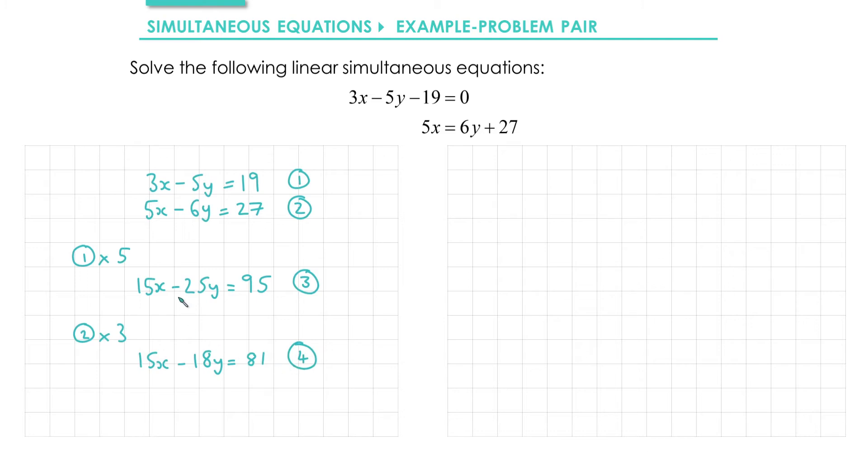The next step is to eliminate the x's from the equation. I can do that by subtracting one equation from the other. Now it doesn't matter which way around you do it, I'm going to do 3 take 4. So that will give us 15x minus 15x which is 0. I've got negative 25y and I'm going to subtract negative 18y. That will give me negative 7y. And then I have 95 minus 81 which gives me 14.